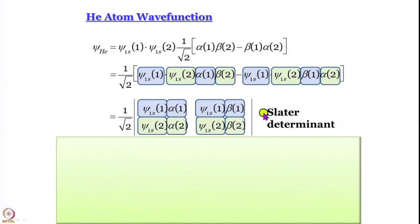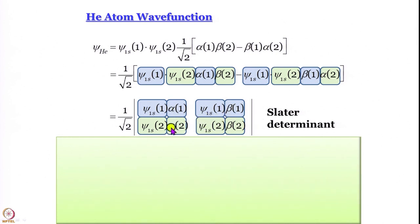Let us have a look at the Slater determinant. Look at the first row — what is constant and what is varying? The electron number is constant. Psi 1s 1 alpha 1, psi 1s 1 beta 1 — what has remained the same is the electron number. Even psi 1s is the same; what has changed is from alpha we have gone to beta. So what has really changed is your spin orbital.